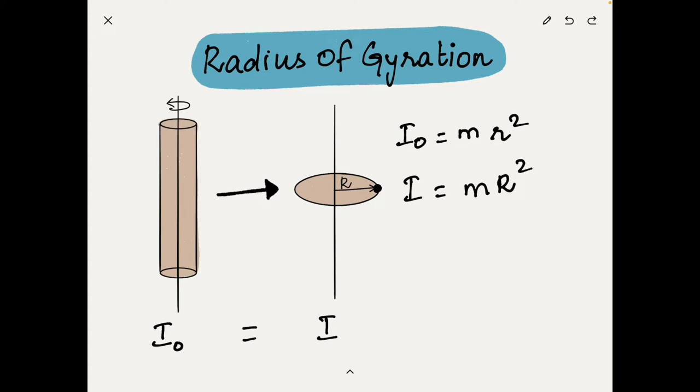The mass moment of inertia for the point mass variant will be m times r squared where r is our radius of gyration.